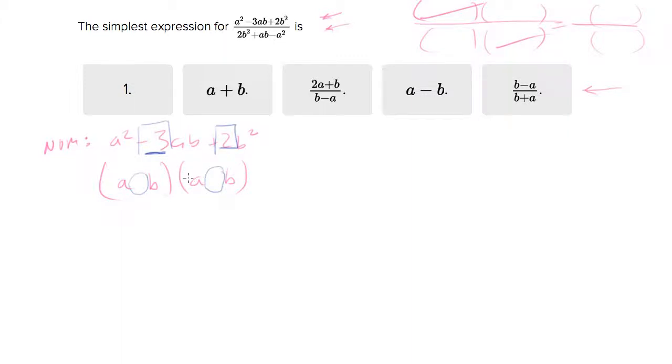So those would be negative two and negative one, right? So I'm going to put a negative two and a negative one. So rewrite this as a minus two b and a minus b. That is the factorization of the numerator.